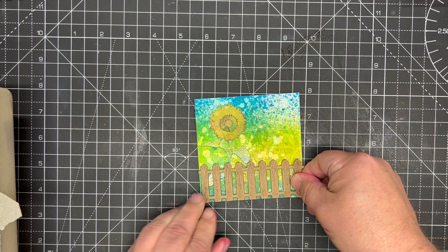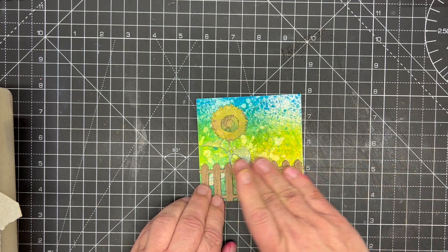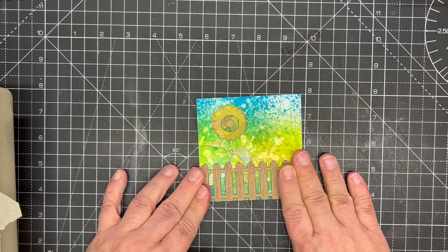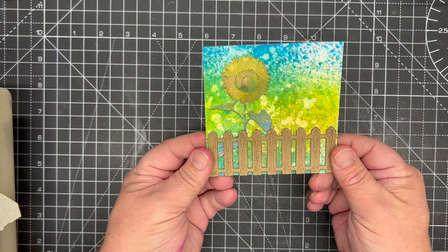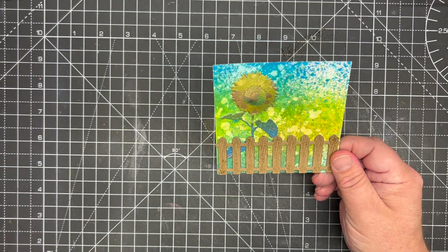And run that across the bottom. So there we have our sunflower against our garden fence.